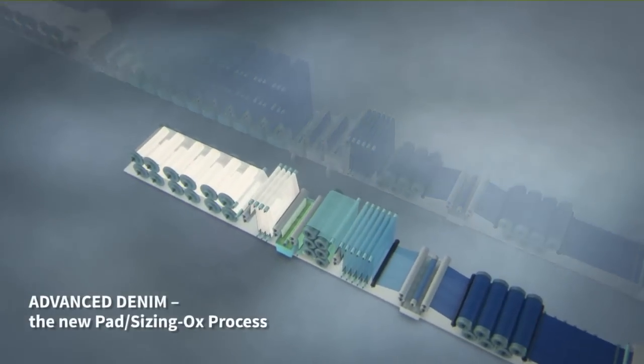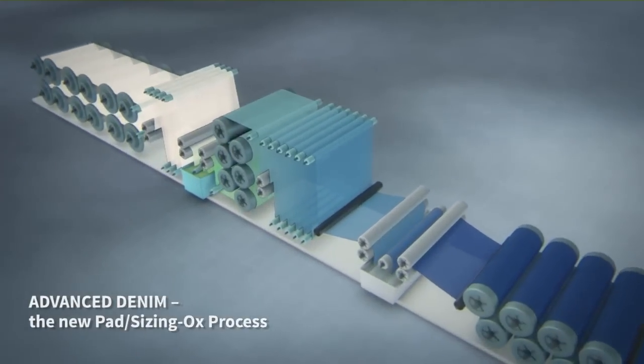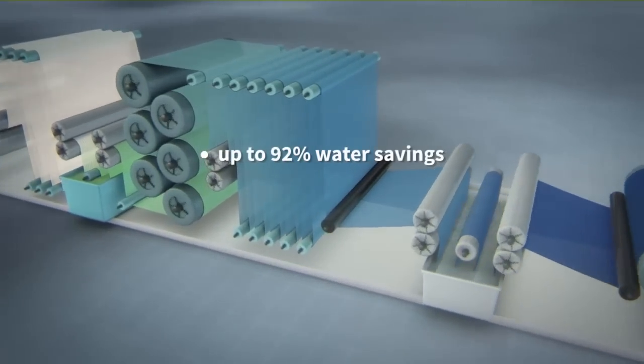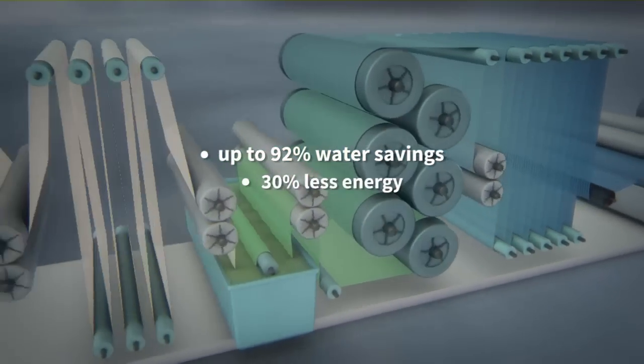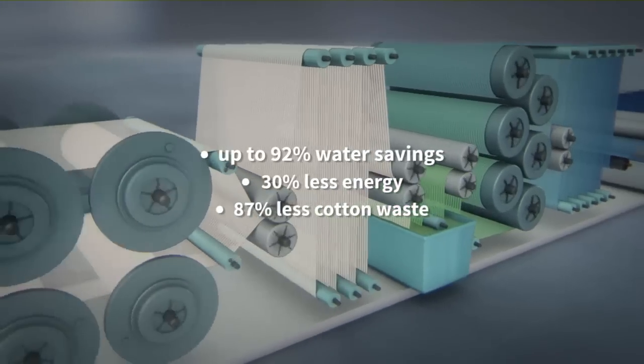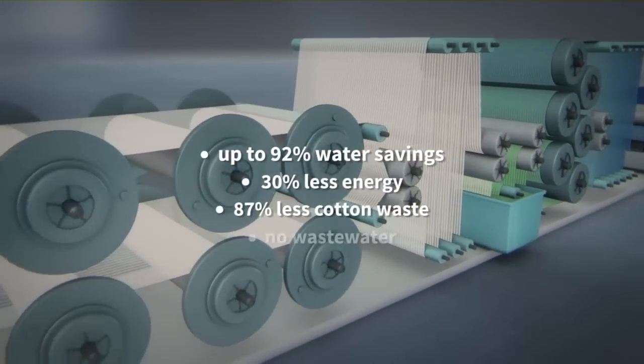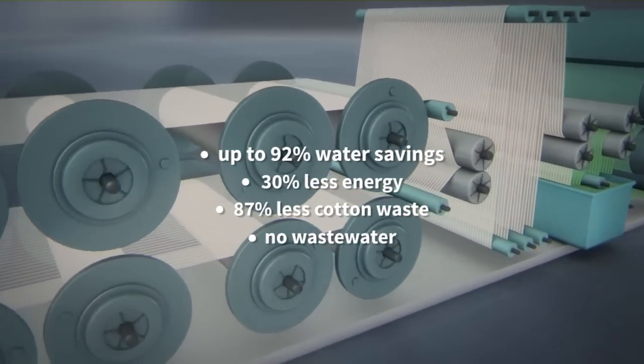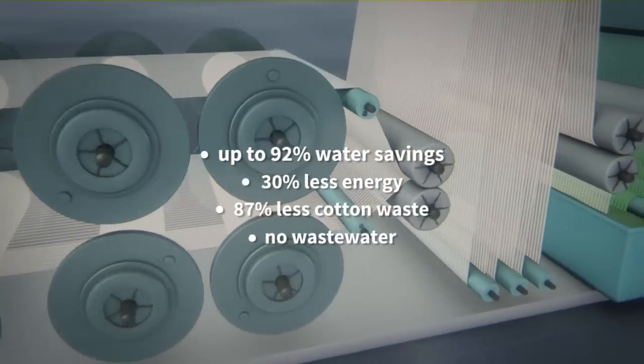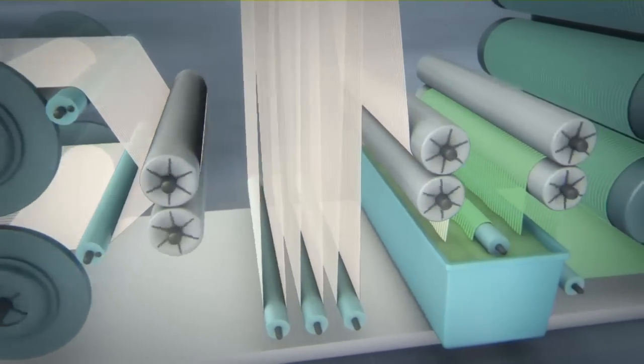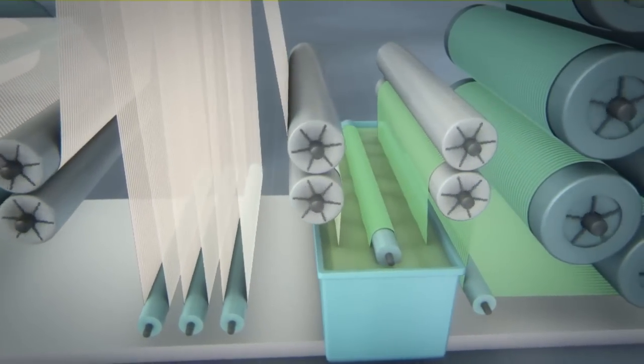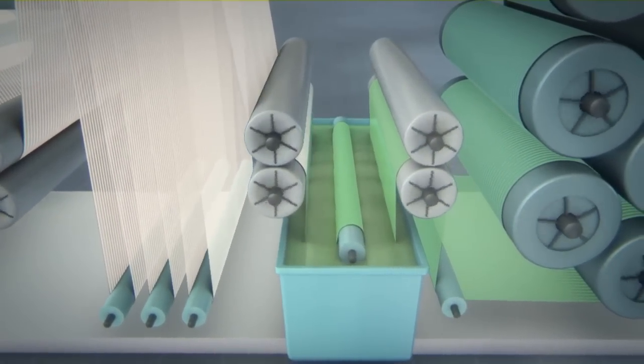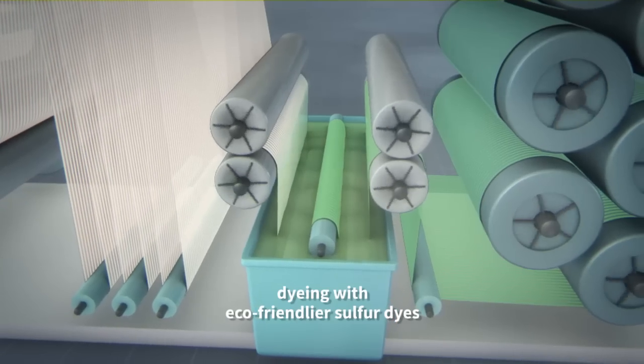The groundbreaking technology of Advanced Denim. The new pad-sizing-ox process provides savings of up to 92% water, 30% energy, and 87% cotton waste during dyeing and sizing, and generates absolutely no wastewater. Central to the new process is the more eco-friendly Archroma generation of concentrated liquid sulfur dyes with a high affinity for cotton.